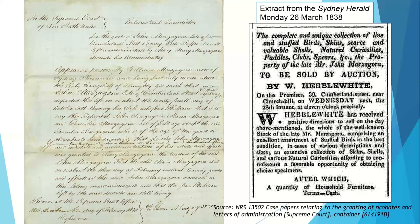From the probate record we learn that Mazagora recently died on the 24th of October, and that his wife and four children survive — but his wife has also recently died, in February. The estate now has to be administered for those four children. We have an ad from the Sydney Morning Herald talking about what is up for sale in March 1838: a unique collection of live and stuffed birds, skins, scarce and valuable shells, natural curiosities, paddles, clubs and spears.